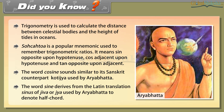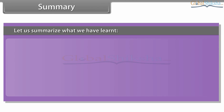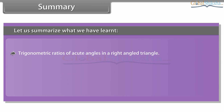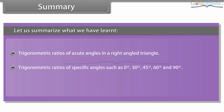The word sine derives from the Latin translation sinus of jiva or jya, used by Aryabhata to denote half chord. Summary: let us summarize what we have learned — trigonometric ratios of acute angles in a right angled triangle, trigonometric ratios of specific angles such as 0°, 30°, 45°, 60°, and 90°, and trigonometric ratios of complementary angles.